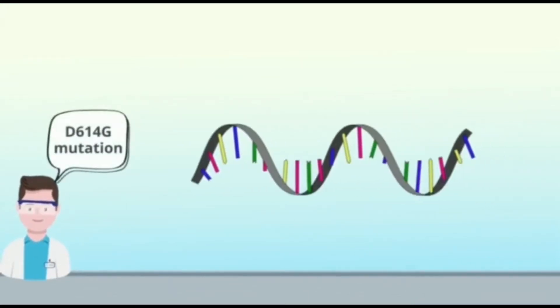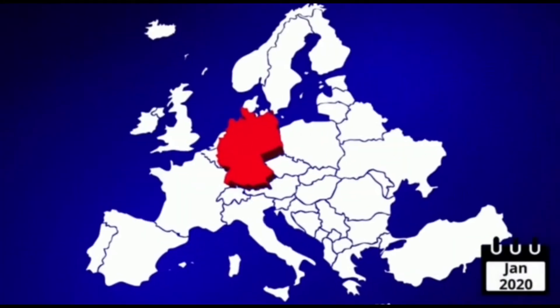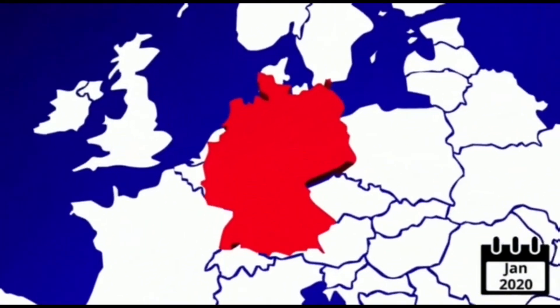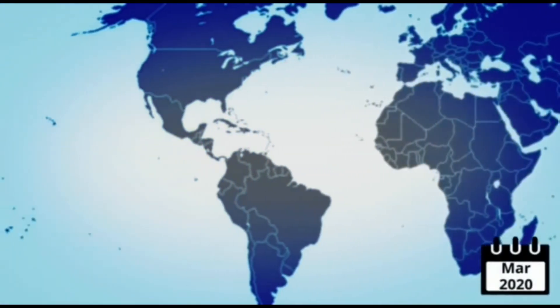It is simply because this mutation changes the amino acid at position 614 residue from D to G. This new variant was first reported in Germany in January 2020, and by March 2020, it was detected around the world.